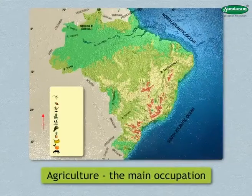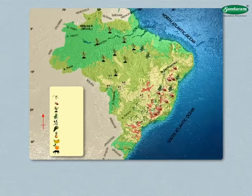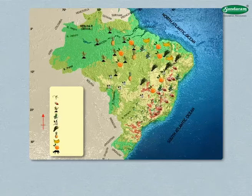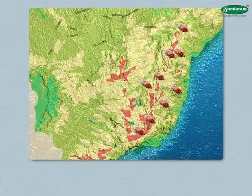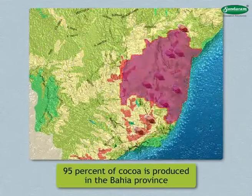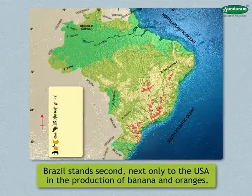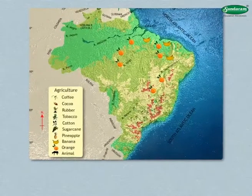Agriculture is the main occupation of people from the plateau region. Coffee, cocoa, rubber, tobacco, cotton, and sugarcane are cultivated on a commercial basis. There are large plantations of fruit crops like pineapple, banana, oranges, and other citrus fruits. Coffee is produced in states like Sao Paulo and Minas Gerais. About 95% of cocoa is produced in the Bahia province. Brazil stands second only to the USA in banana and orange production, and leads the world in the production of coffee, cocoa, and rubber.